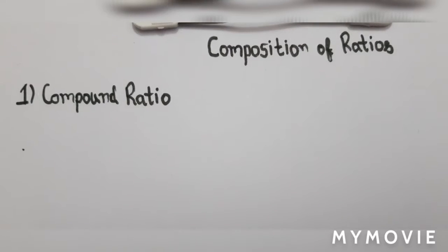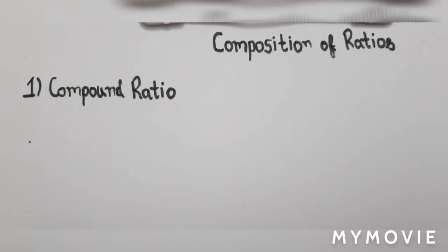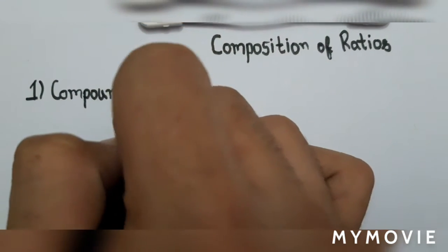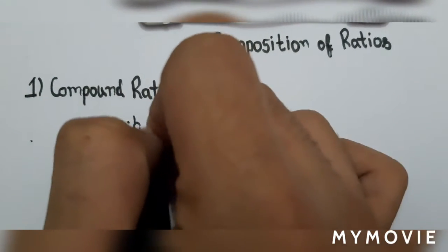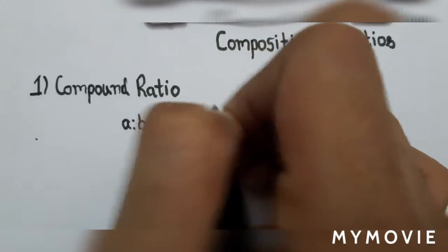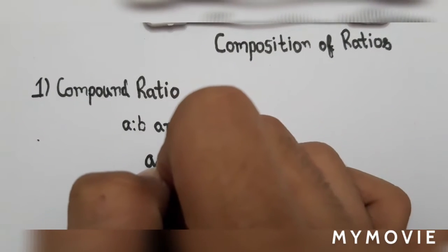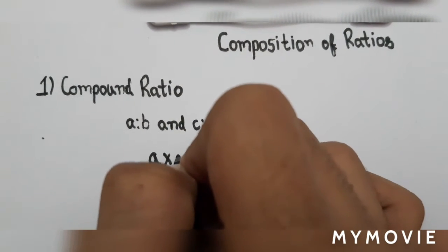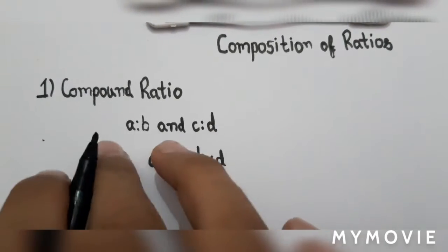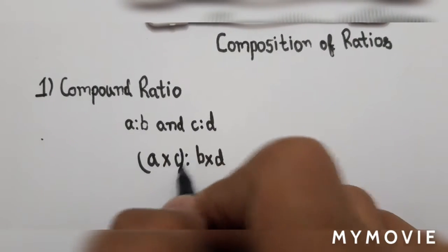In composition of ratios, first comes compound ratios. Compound ratio means if you are provided with two ratios, A:B and C:D, then your answer would be A×C : B×D. So this will be your compound ratio.